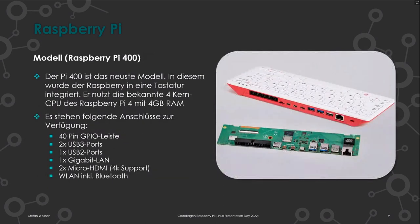Die Raspberry Pi Foundation hat eine Tastatur herausgebracht, und jemand hatte die Idee, einen Raspberry Pi direkt in die Tastatur einzubauen – so entstand der Raspberry Pi 400. Er vereint die Tastatur mit einem Raspberry Pi 4 mit 4 GB RAM. Die Anschlüsse sind dieselben wie beim Pi 4, mit einem Unterschied: Es gibt nur einen USB-2-Port, weil die Tastatur intern über diesen einen USB-2-Port angeschlossen ist.